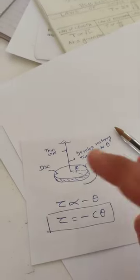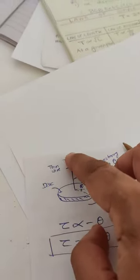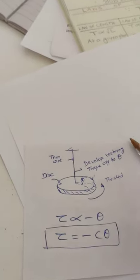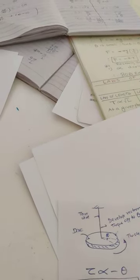When we are twisting, we are applying torque. The wire develops a restoring torque. We are giving anti-clockwise rotation like this to the disc. It develops restoring torque. The moment we release, this disc starts twisting.